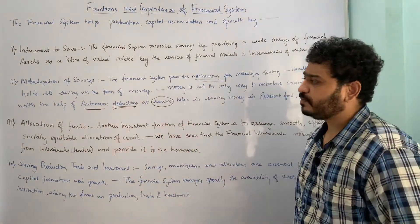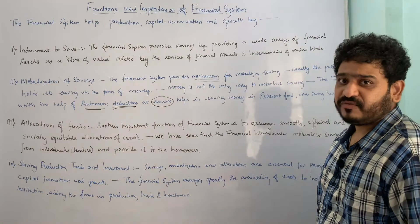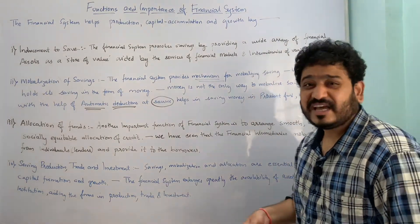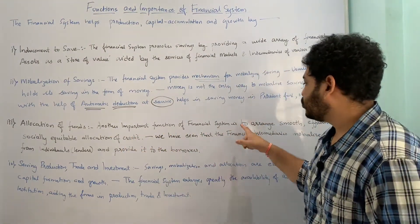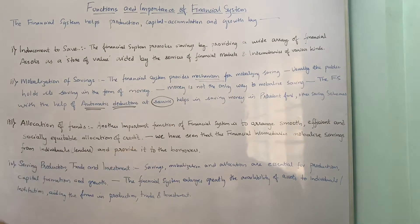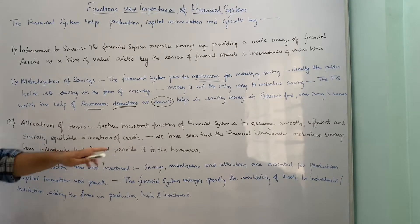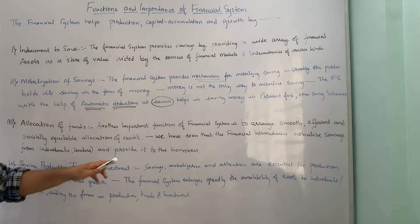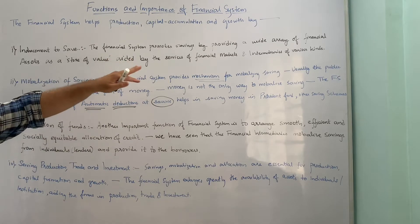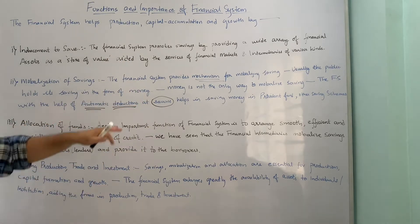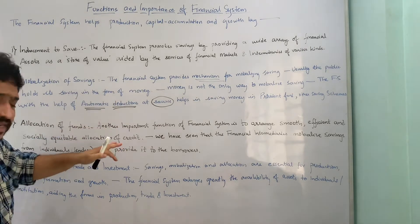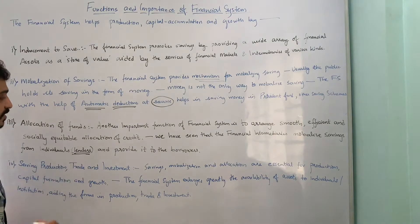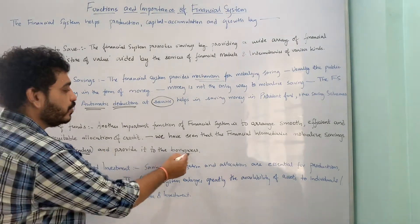Let us now move to the third important point, which is allocation of funds — how financial systems help us to allocate funds efficiently and effectively. Another important function of the financial system is to arrange a smooth, efficient, and socially equitable allocation of credit. Financial intermediaries such as banks and various other institutions mobilize savings from individuals — the lenders — and provide it to the borrowers.